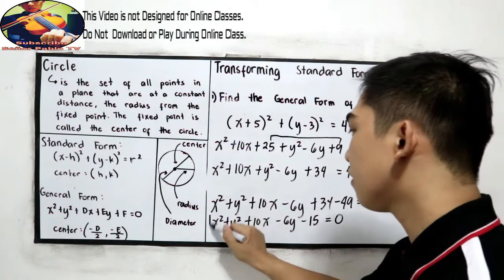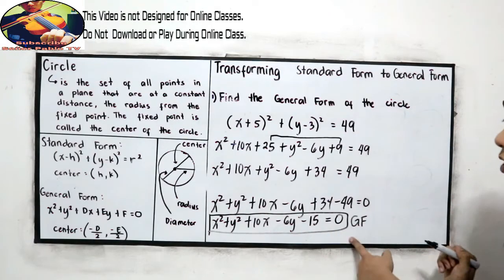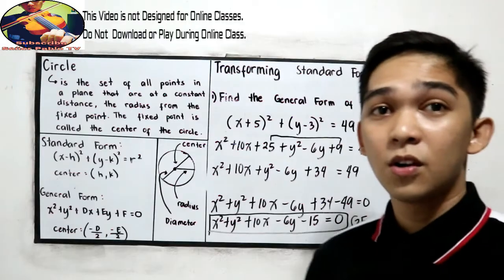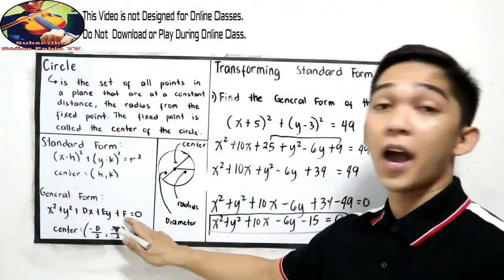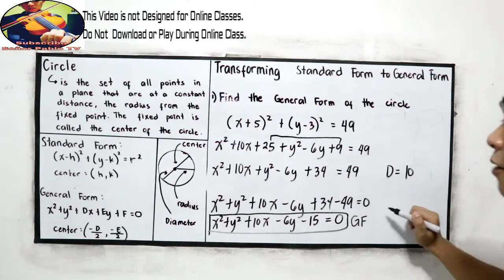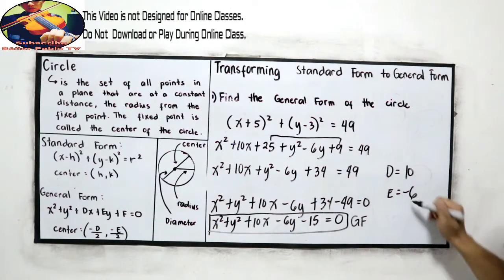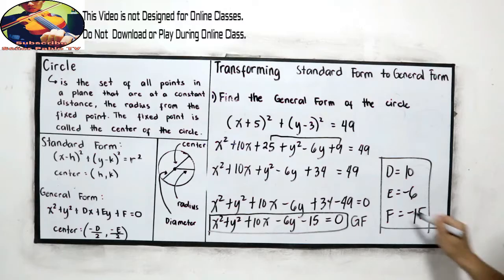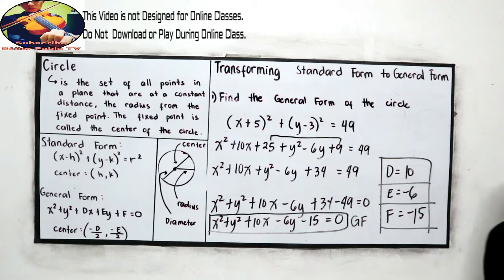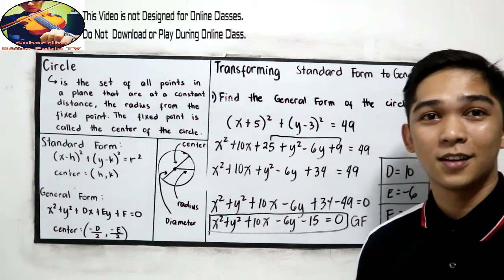This will be the general form of the circle. If your teacher asks you to find the value of D, E, and F: the value of D is 10, the value of E is negative 6, and the value of F is negative 15.